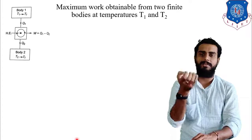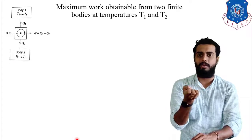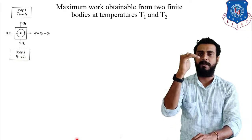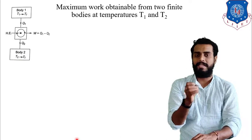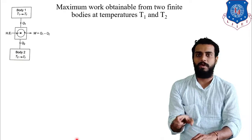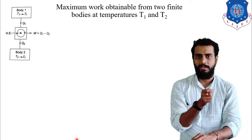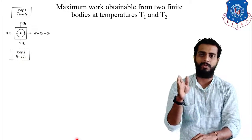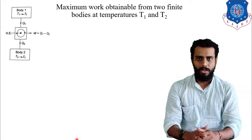This cyclic heat engine will extract Q1 amount of heat from the T1 body and will reject Q2 amount of heat to the T2 body. It will do some work W that is equivalent to Q1 minus Q2.